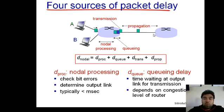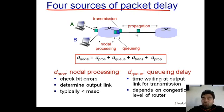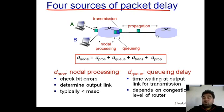You may recall that distance equals speed multiplied by time. To calculate propagation delay, we rearrange this: time equals distance divided by speed. If the link is optical fiber, you use the speed of light; if it is a coaxial cable, you use the speed of electricity. So propagation delay equals distance divided by the speed of the medium.